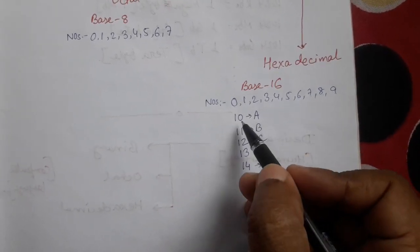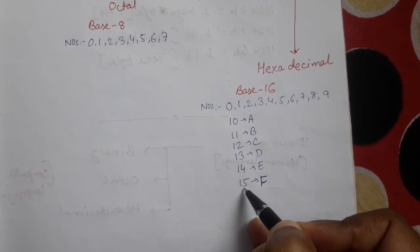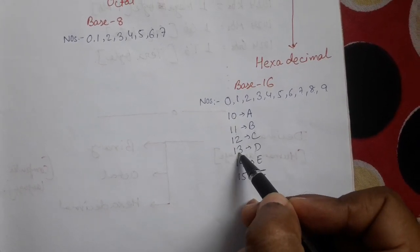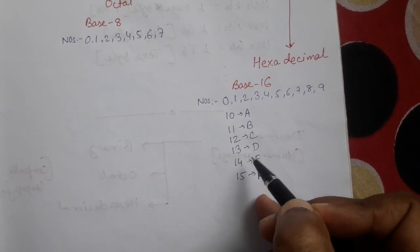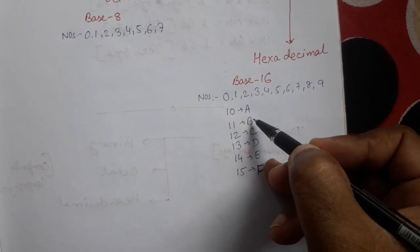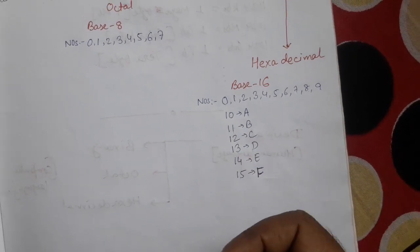In hexadecimal, the values continue: 10, 11, 12, 13, 14, 15 — but instead of writing 10, 11, 12, 13, 14, 15, we write a, b, c, d, e, f.